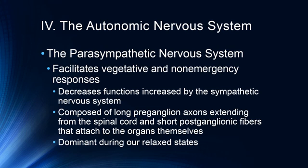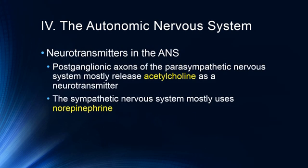We'll talk more about stress and the hypothalamic-pituitary-adrenal axis later in the semester. The neurotransmitters primarily involved in the autonomic nervous system are acetylcholine and norepinephrine. The postganglionic axons of the parasympathetic nervous system mostly release acetylcholine, whereas the sympathetic nervous system mostly uses norepinephrine. A boost in norepinephrine increases sympathetic nervous system response, which is why drugs like amphetamines and cocaine initiate that response. Acetylcholine is more involved with the parasympathetic nervous system, keeping us in a more relaxed state. That concludes this brief introduction; part two will cover the various divisions of the vertebrate brain.